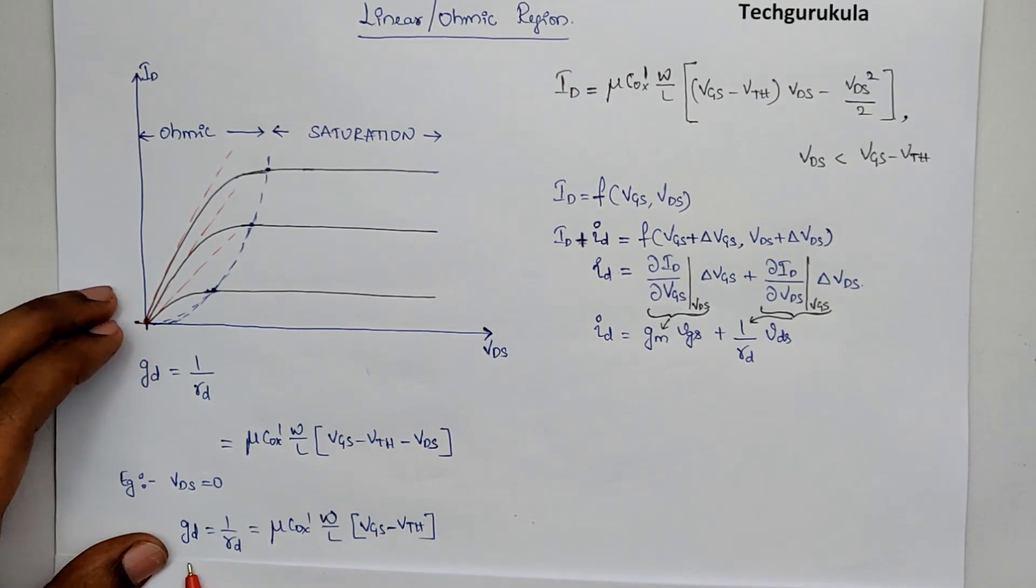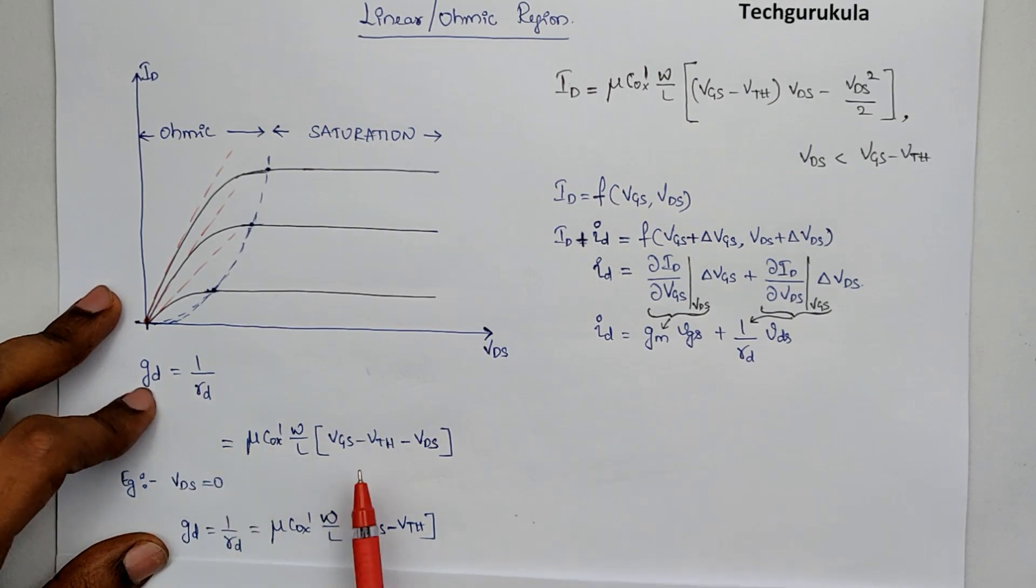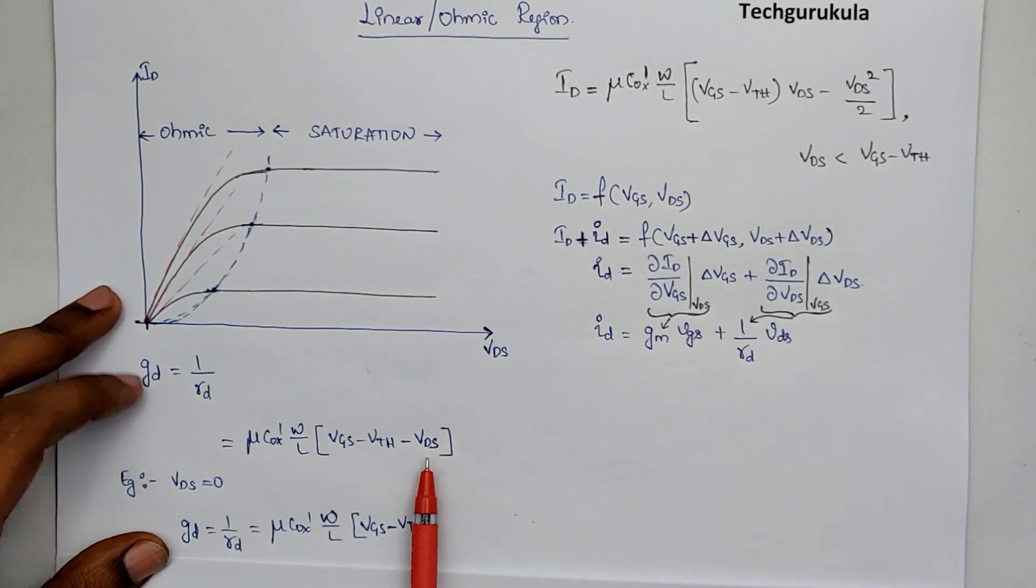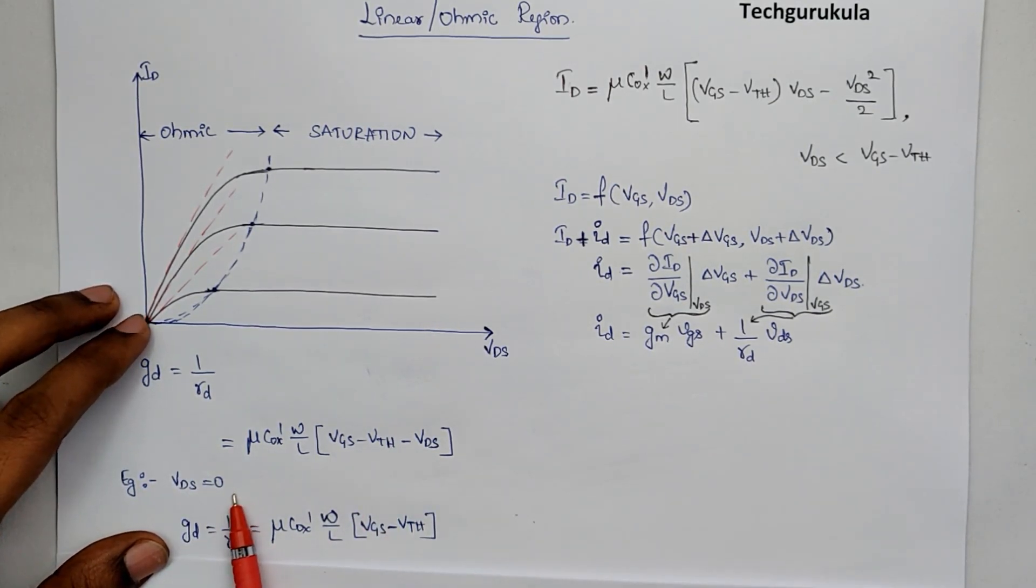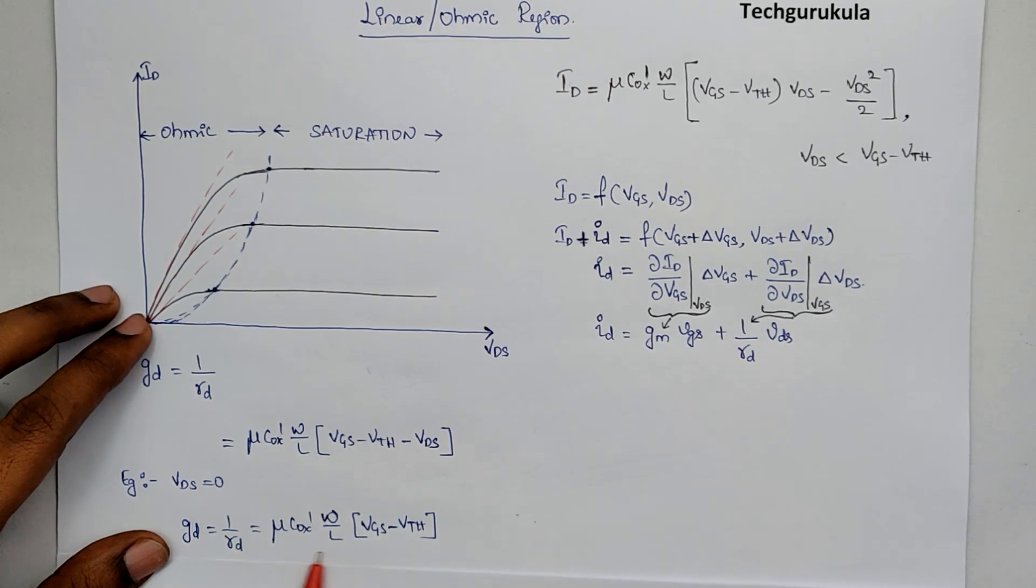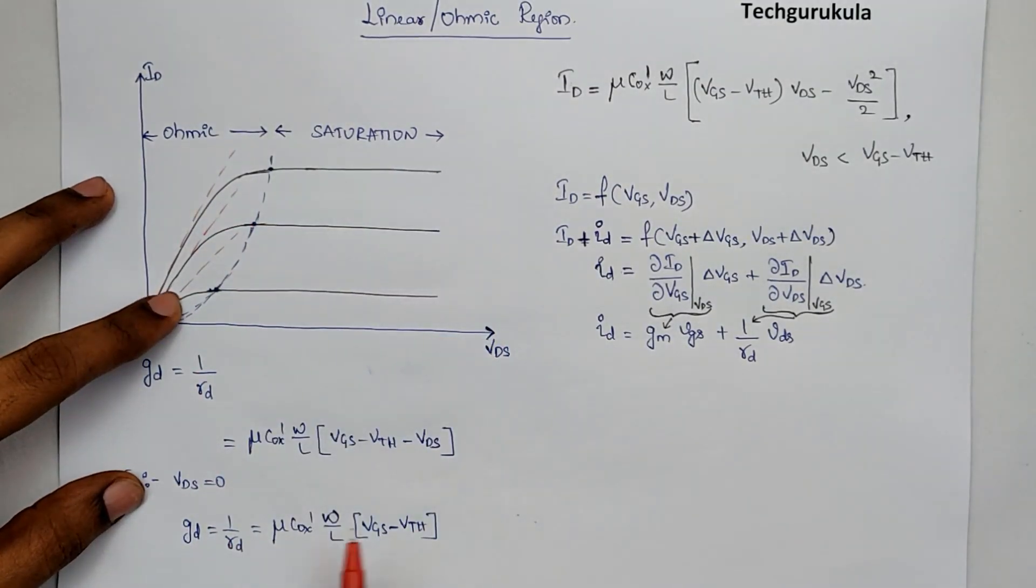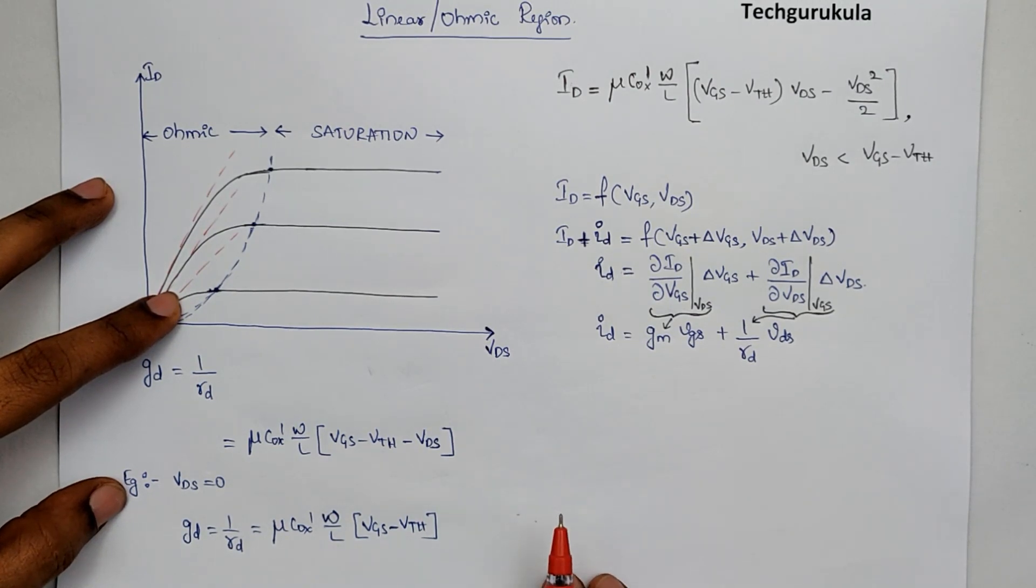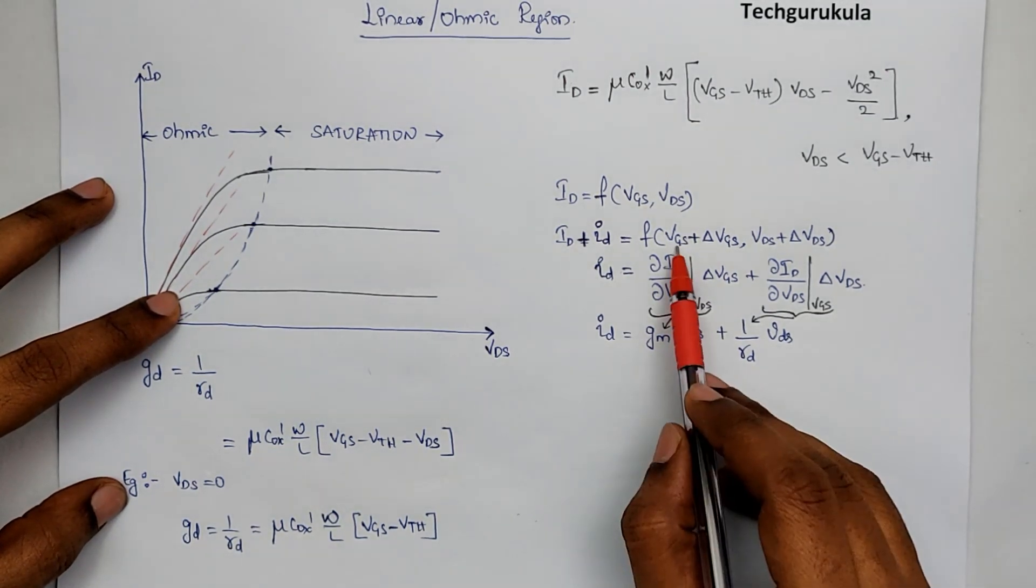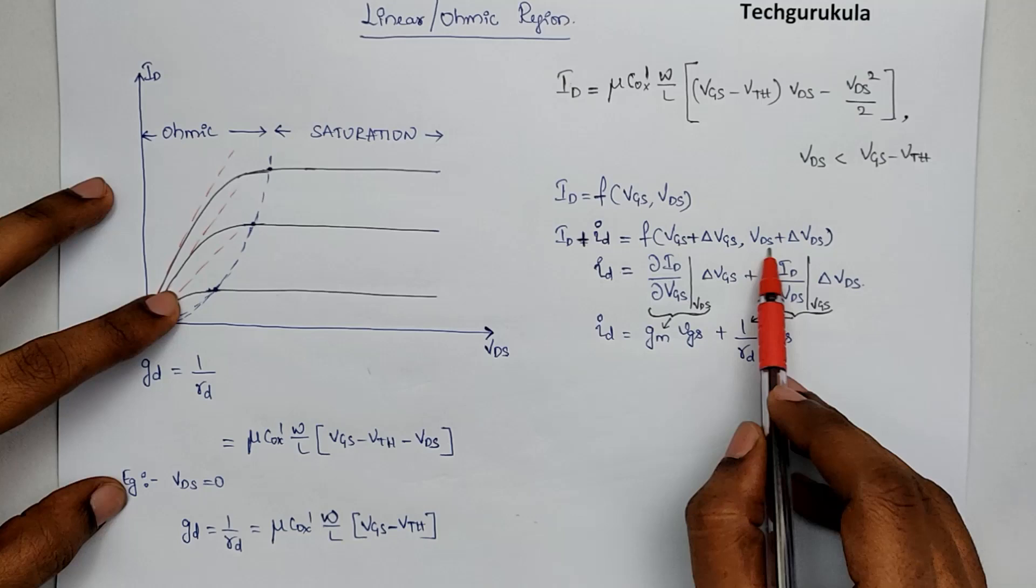But of course, if you go back and see, this GD is actually a function of VGS and VDS. We are looking at VDS equal to 0 so that we understand what this GD is at a given VGS value. As VGS changes, the slope of this curve changes, which means the slope actually depends on the DC biasing point, which is basically the VGS and the VDS.